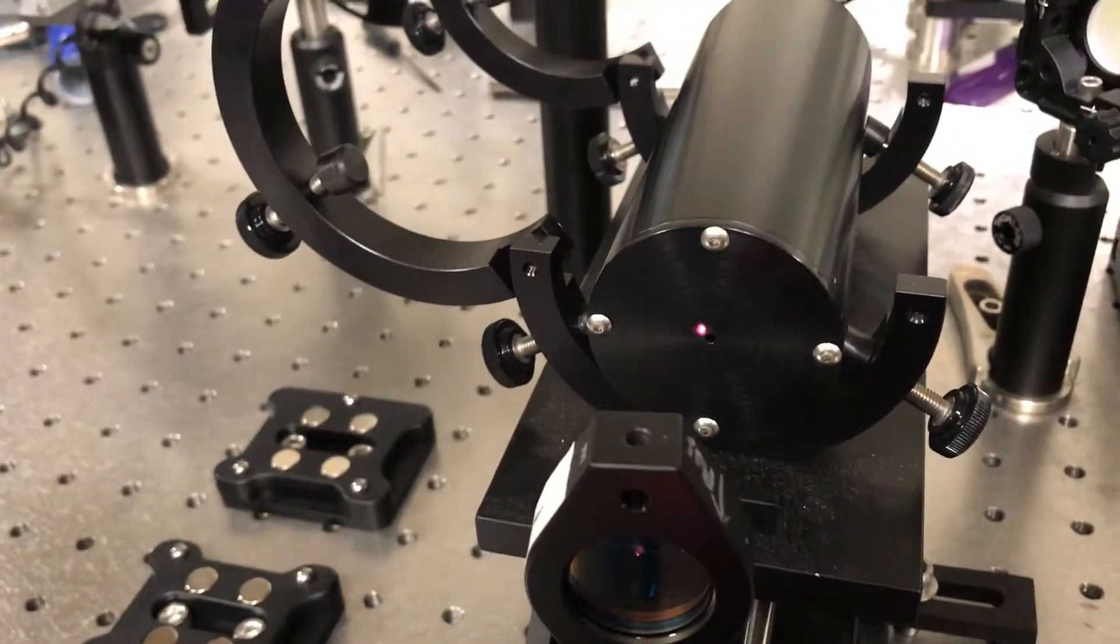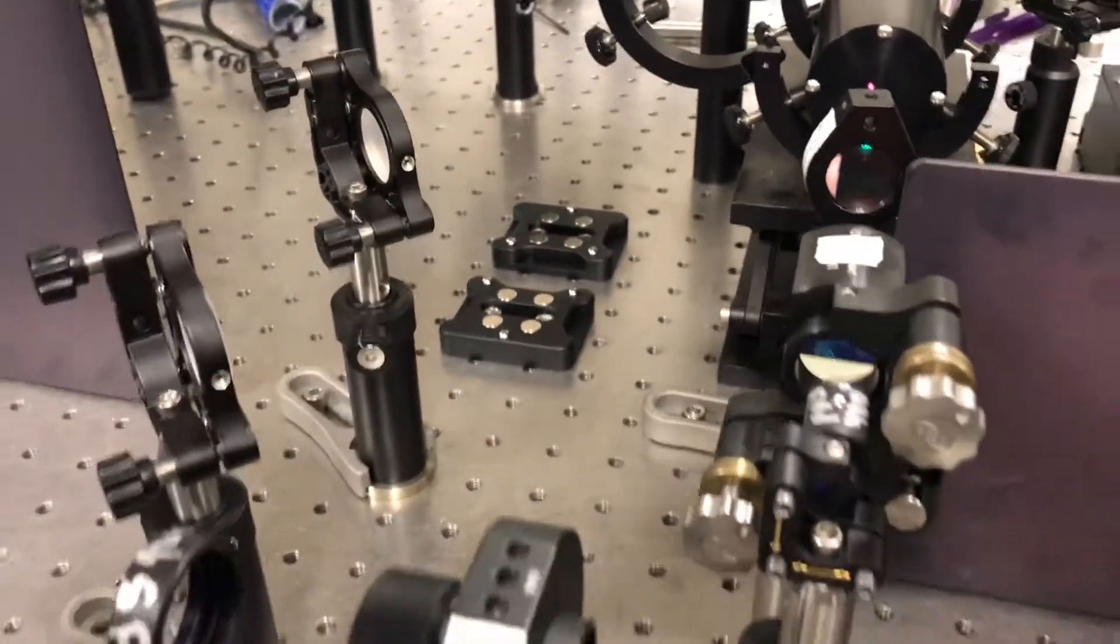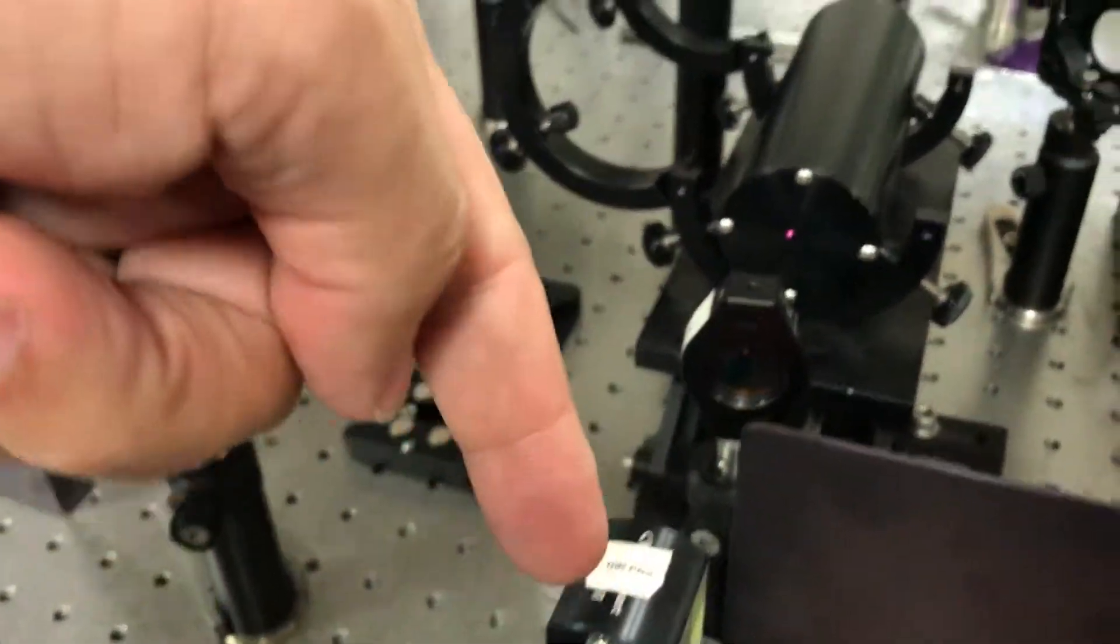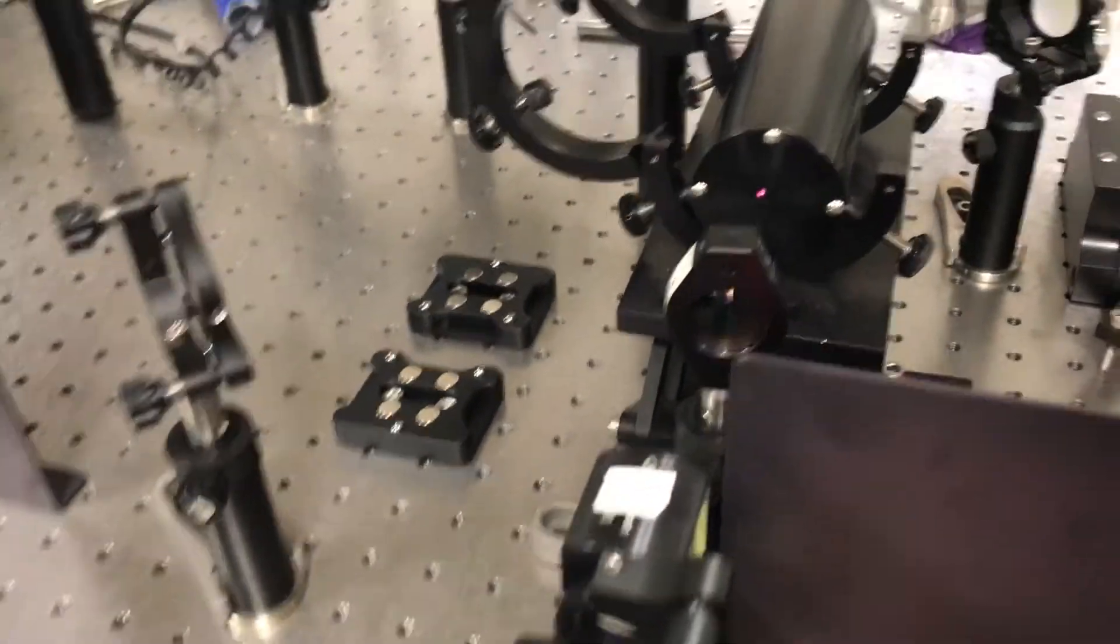Now, what you don't want to do is redo what you just did. So we already have this polarizing beam splitter set up so that the laser goes directly down the line of the table. We don't want to mess that up.